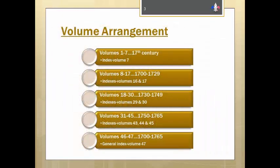As a review, in part one we saw how the 47 volumes are actually grouped together in five different sections. Each group had its own index as the last one, two, or three volumes of the grouping. So the first grouping consisted of volumes one through seven, with the index in volume seven. The second grouping consisted of volumes eight to seventeen, with the indexes in the last two volumes, and so it continued.